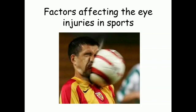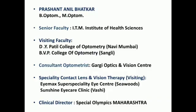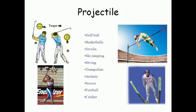We are going to discuss the factors affecting the type of eye injury in sports. Before we begin, it is necessary to understand an important word we will use throughout this lecture: 'projectile.' In sports, a projectile is an object that can cause injury while a sport is being played. For example, in a cricketing eye injury, the projectile could be the cricket ball.